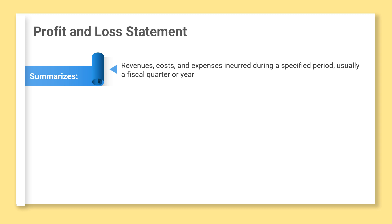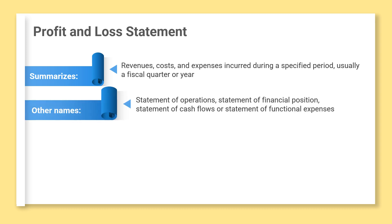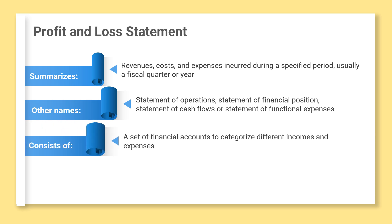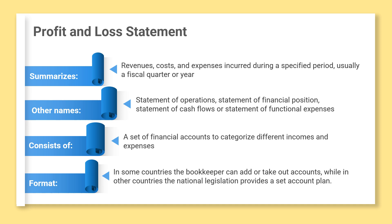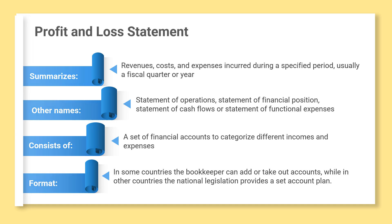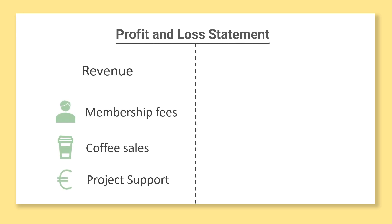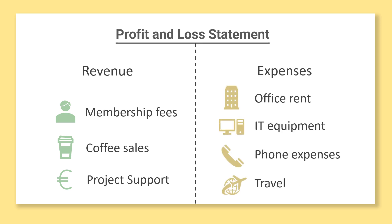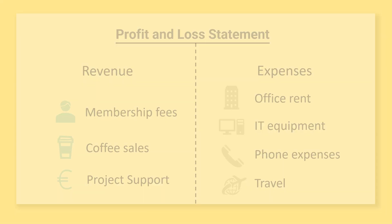The profit and loss (P&L) statement is a financial statement that summarizes the revenues, costs, and expenses incurred during a specific period, usually a fiscal quarter or year. A non-profit entity issues a somewhat different set of financial statements than those issued by a for-profit entity. In some organizations, the P&L statement is called a statement of operations, statement of financial position, statement of cash flows, or statement of functional expenses. The P&L statement consists of a set of financial accounts to categorize different incomes and expenses. In some countries, the bookkeeper can add or remove accounts so it is tailored to your NGO; in others, national legislation provides a set account plan that should be used. A P&L statement could have accounts such as membership contributions, sale of coffee, or project support to break down revenues, and accounts like office rent, IT equipment, phone expenses, and travel to categorize expenses.